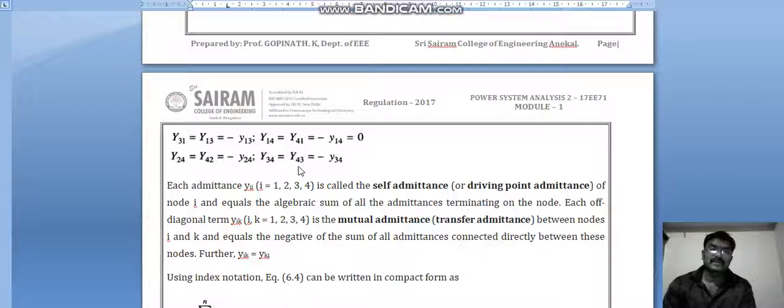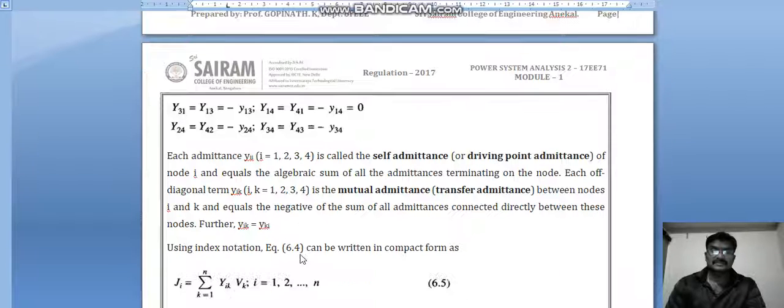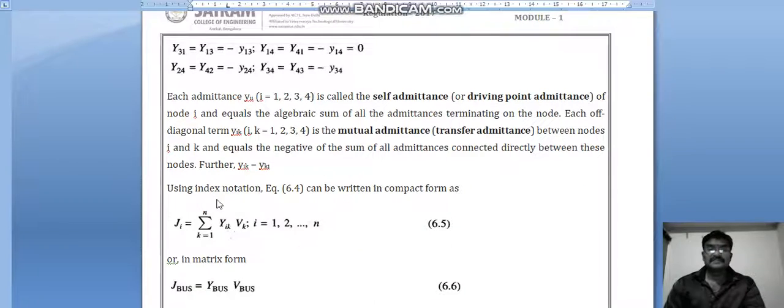Each admittance Yii, that is i equals 1, 2, 3, 4, is called self-admittance or driving point admittance of node i and equals the algebraic sum of all the admittance terminating on the node. Each off-diagonal term Yik, where i, k equals 1, 2, 3, 4, is the mutual admittance or transfer admittance between nodes i and k, equals the negative of the sum of the admittances connected directly between the nodes. Yik equals Yki.